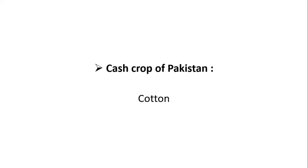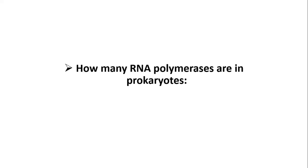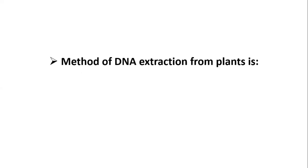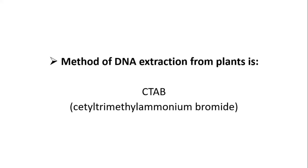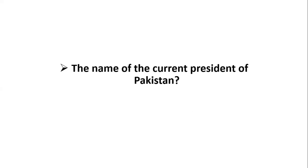Cash crop of Pakistan is cotton. GMO crop of CEMB is cotton. How many RNA polymerases are in prokaryotes? One. Method of DNA extraction from plants is CTAB. The name of current president of Pakistan is Asif Ali Zardari.